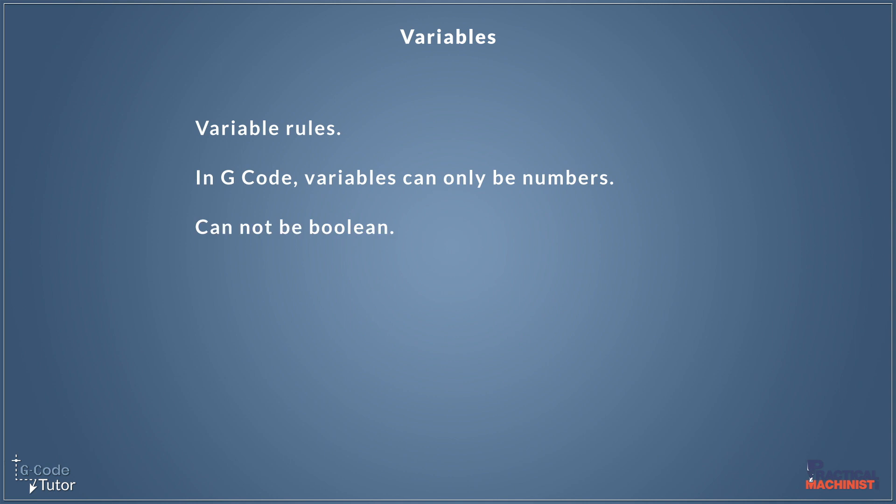The second rule is it cannot be boolean. Now this means we can't set the variable to on or off, but we can work around this limitation. Because we could say a variable equals one, for example. And in the program, we could say, if variable equals one, then do this. If it does not, then do something else. And we can get our boolean by manipulating the variables like that. But that is a massive subject for another day. So although the variables are not boolean, we can manipulate them to be with our programs.